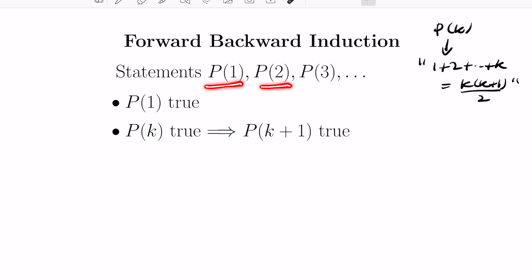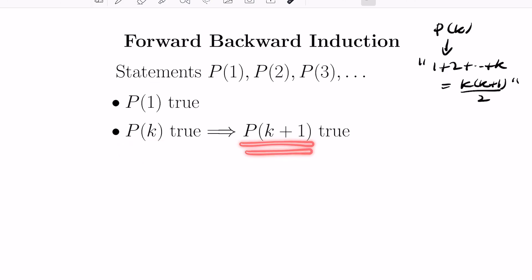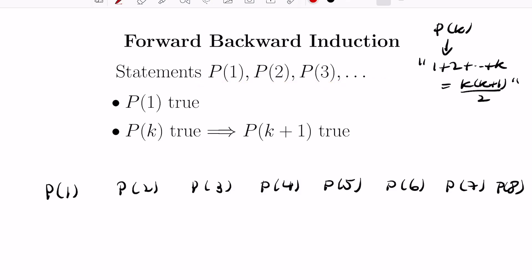With statements indexed by the positive integers, in general induction we have the following situation: if you can prove that P(1) is true, and you can also prove that if P(k) is true then P(k+1) is true, then you get that all these statements are true. The idea is: knowing P(1) is true, with k=1 you get P(2) is true; applying this again with k=2 you get P(3) is true, and this cascades to give you all statements are true.